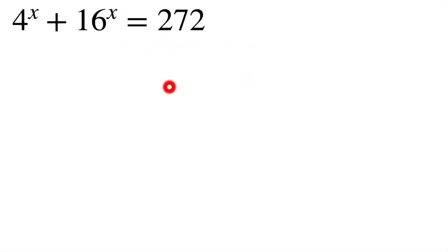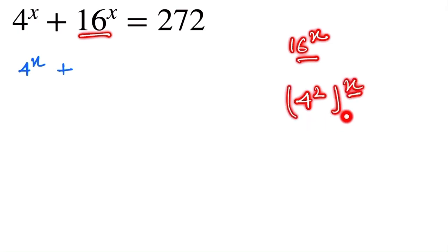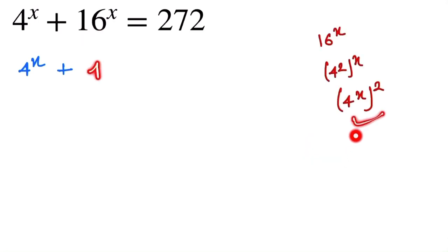At first, we notice this point: 16^x can be written as (4^2)^x, so we can change the power. Here it becomes (4^x)^2. So we write it here: 4^x + (4^x)^2 = 272.